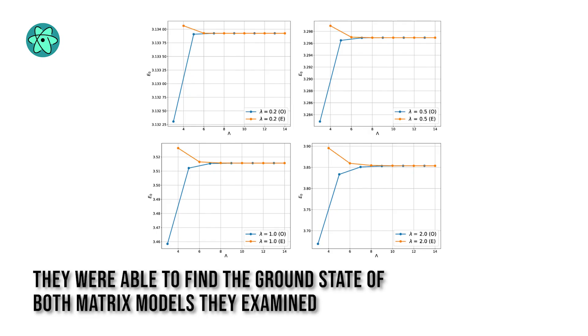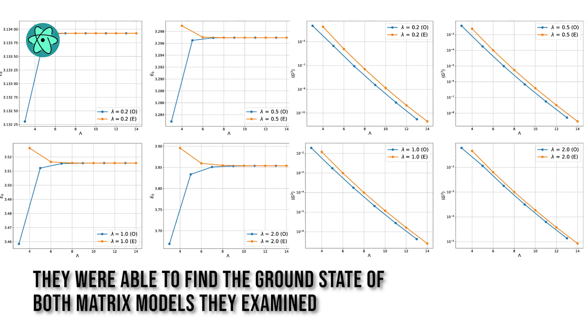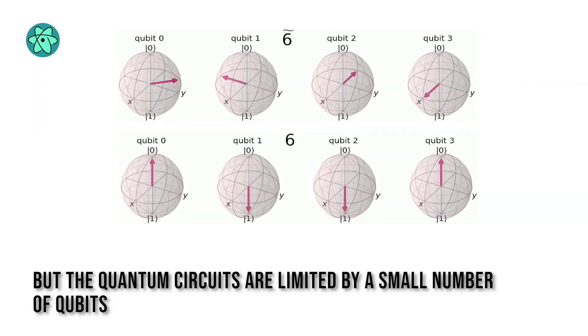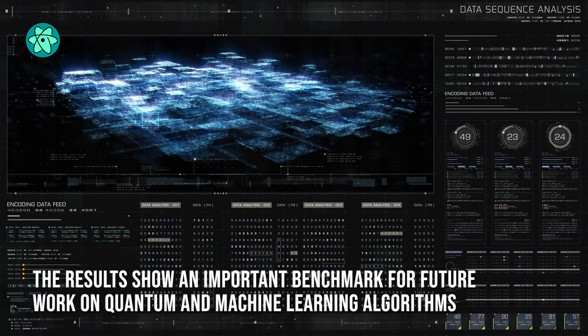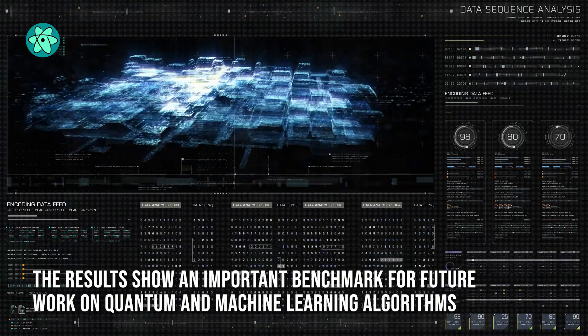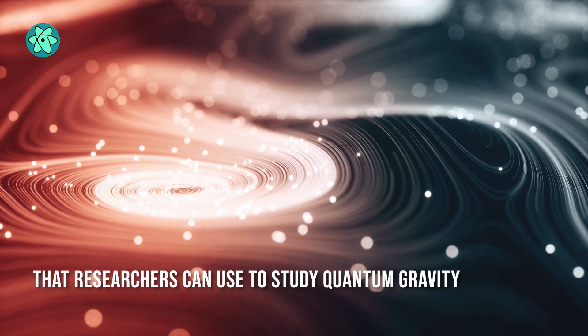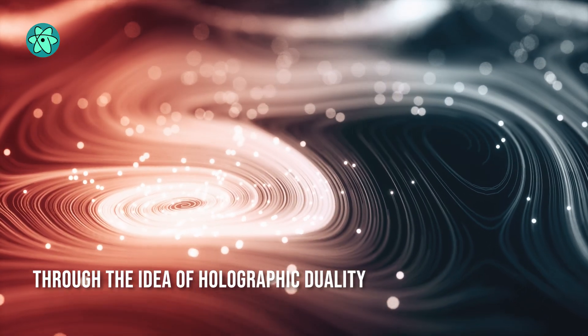Then they used a special neural network in order to find the wave function of the matrix with the lowest possible energy, its ground state. The researchers were able to find the ground state of both matrix models they examined, but the quantum circuits are limited by a small number of qubits. The results, says Rinaldi, show an important benchmark for future work on quantum and machine learning algorithms that researchers can use to study quantum gravity through the idea of holographic duality.